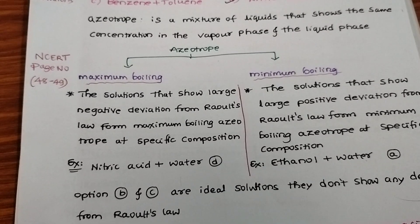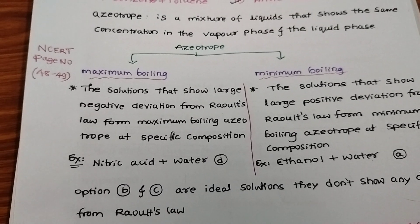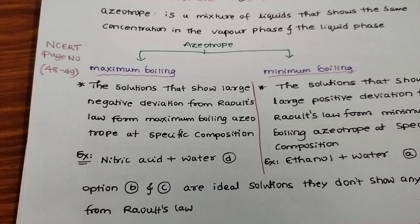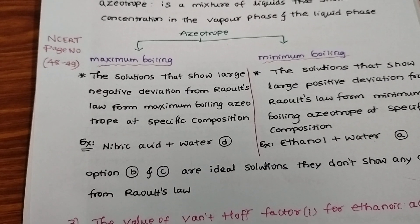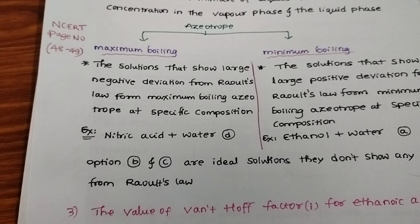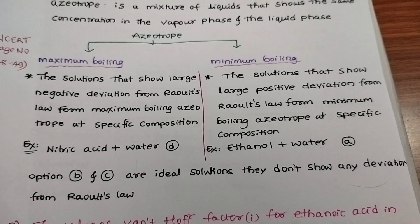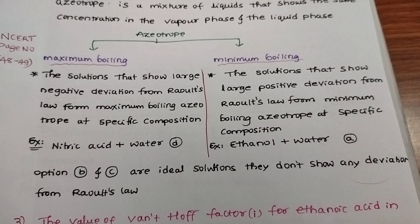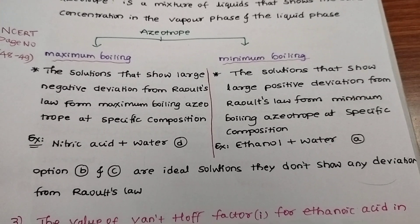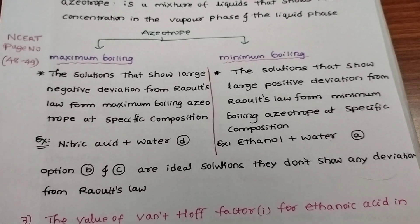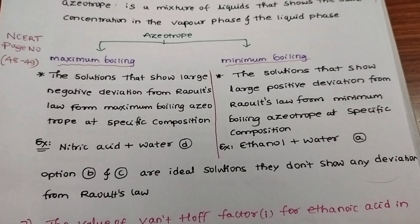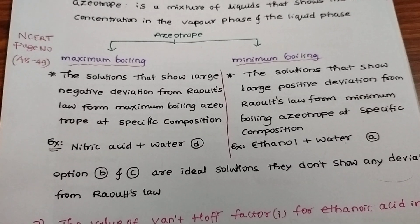For maximum boiling, the solutions that show large negative deviation from Raoult's law form maximum boiling azeotrope. The solutions that show large positive deviation from Raoult's law form minimum boiling azeotrope at specific composition.